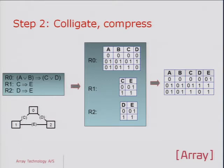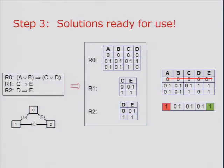We want to satisfy all those rules and constraints, so we have to make the conjunction of them. This is basically a simple join where we join those three relations into a single one. The output is the complete solution space over A, B, C, D, E. If I make the assertion that A is true — value one — we can simply make a union on each of the columns to identify what are now the valid combinations. We see that E is bound to one, or true. If we had not combined those relations, we would have to do some search and backtracking to deduce that result.